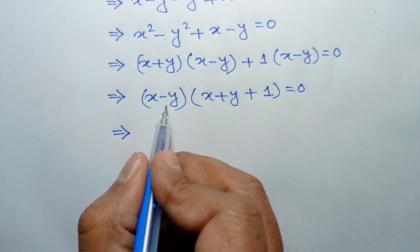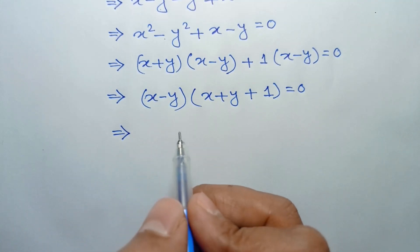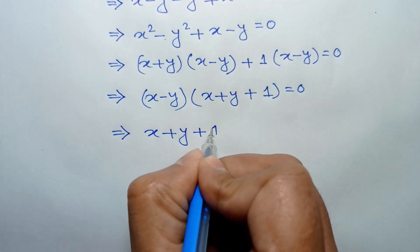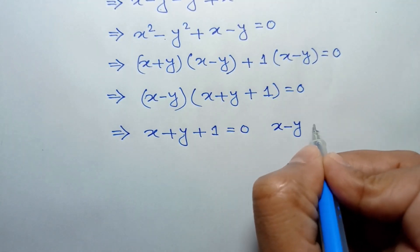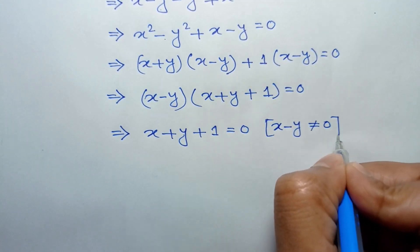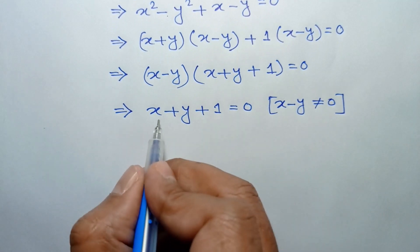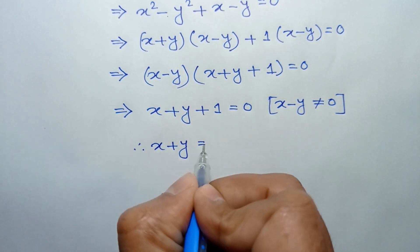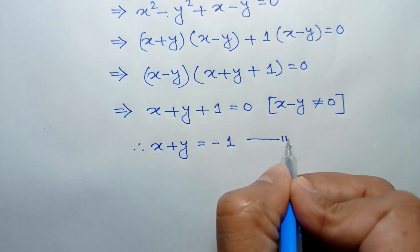Since x is not equal to y, x minus y is not equal to 0. So we will have x plus y plus 1 equals 0. Taking the 1 to the right side, we get the value of x plus y equals negative 1. Call it equation number 3.